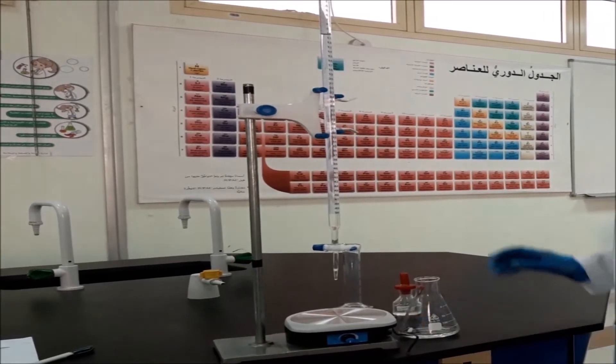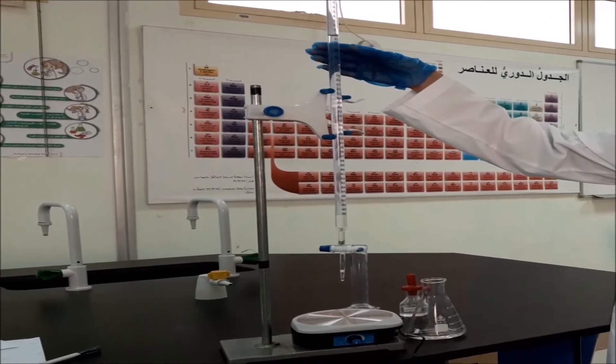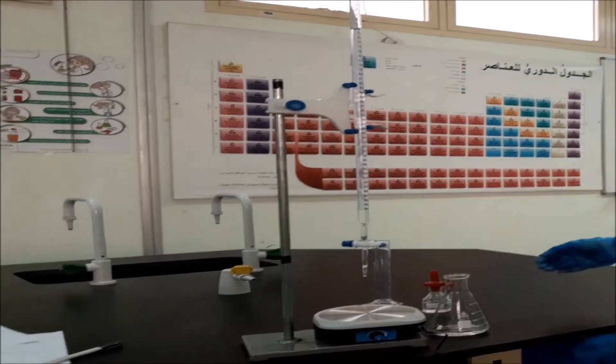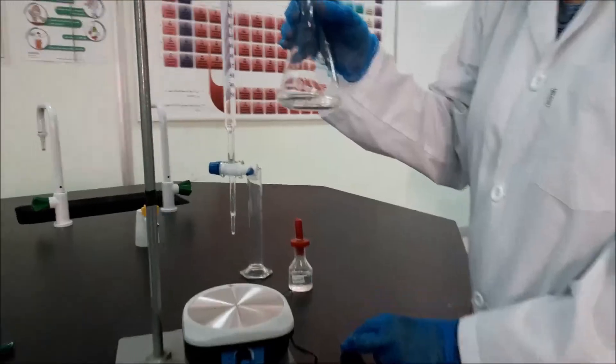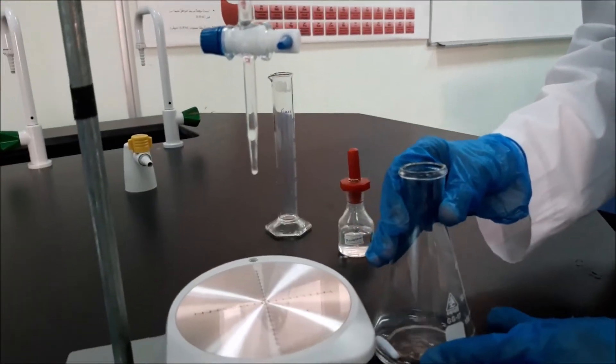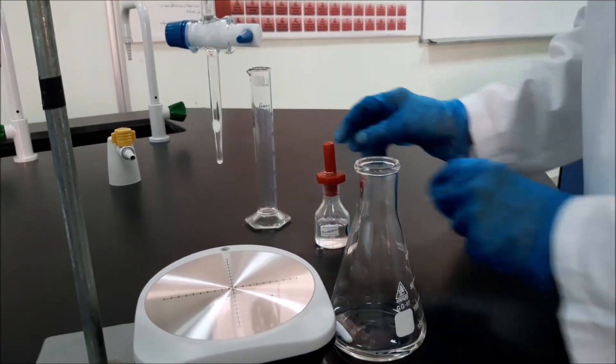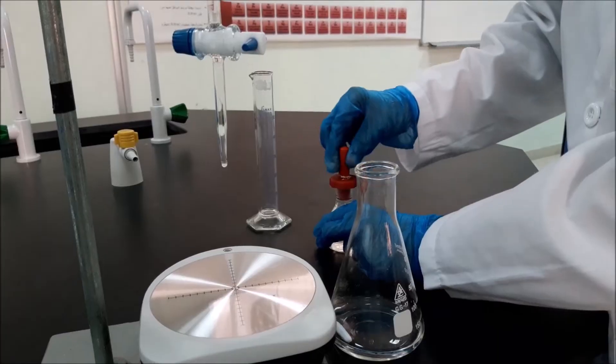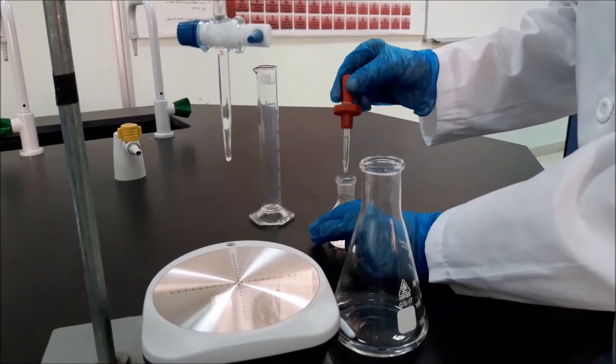For trial 2, the initial reading of NaOH is 10 ml. I have here 20 ml acetic acid. I will put 3 drops of phenolphthalein in the acetic acid.